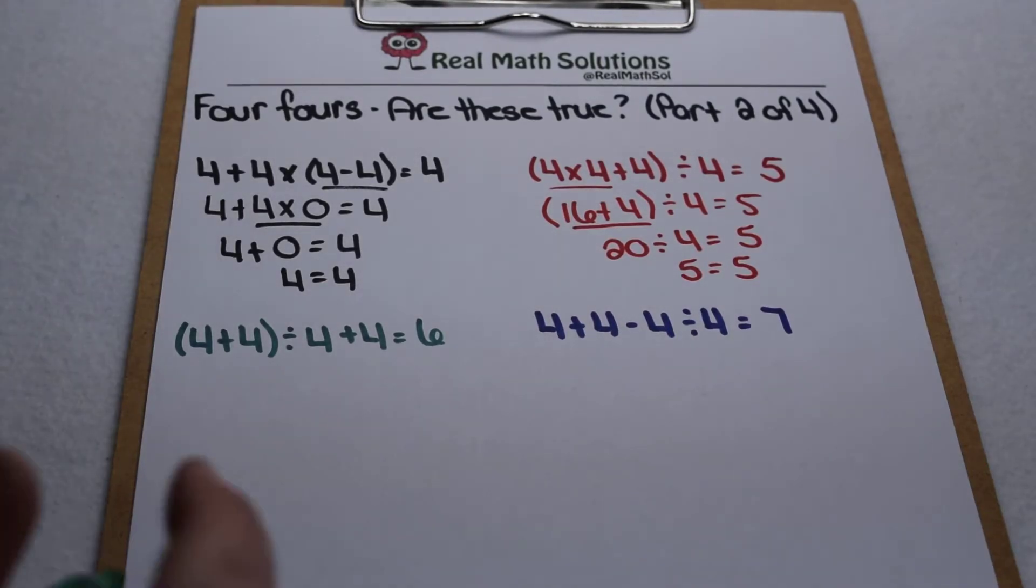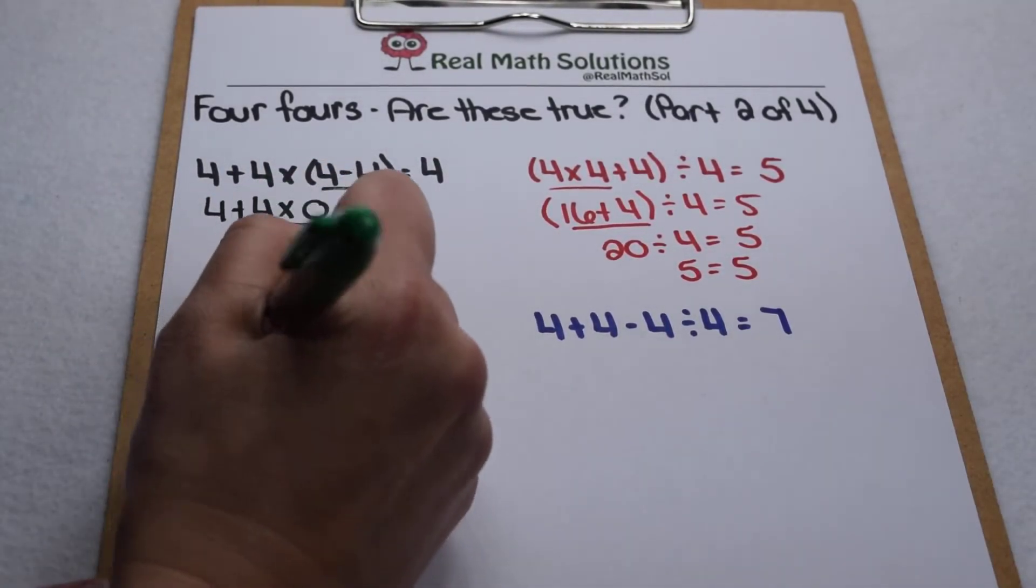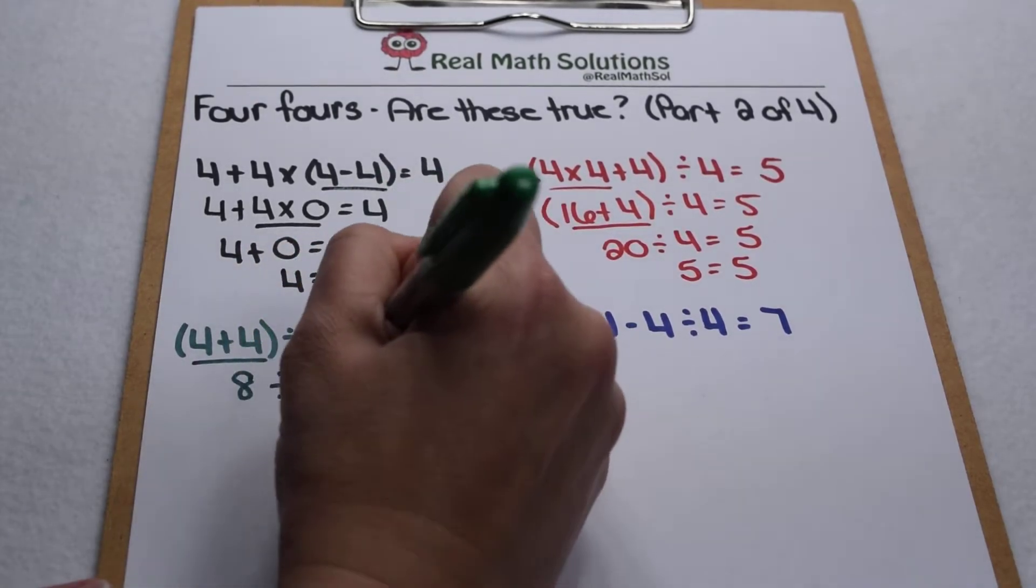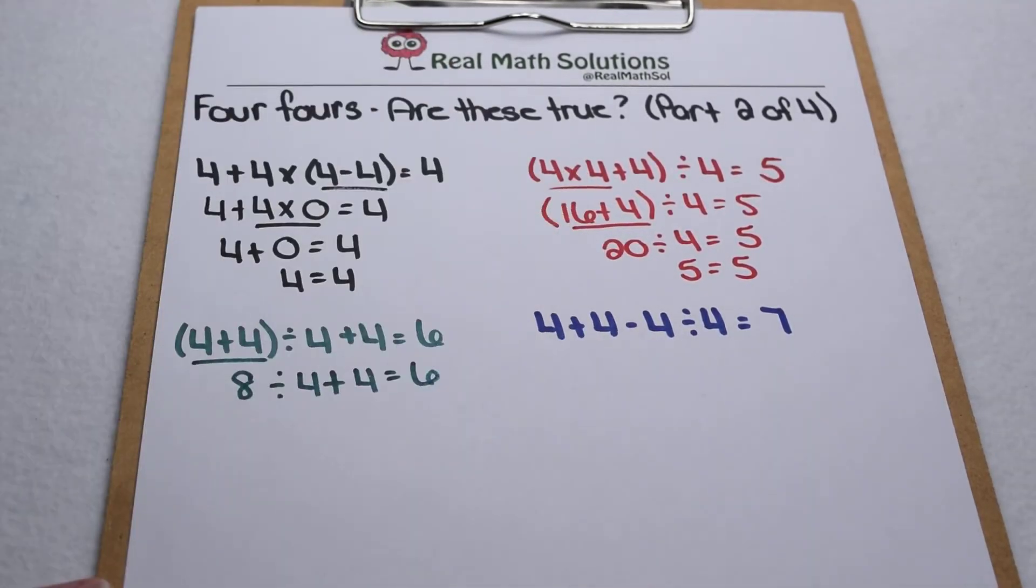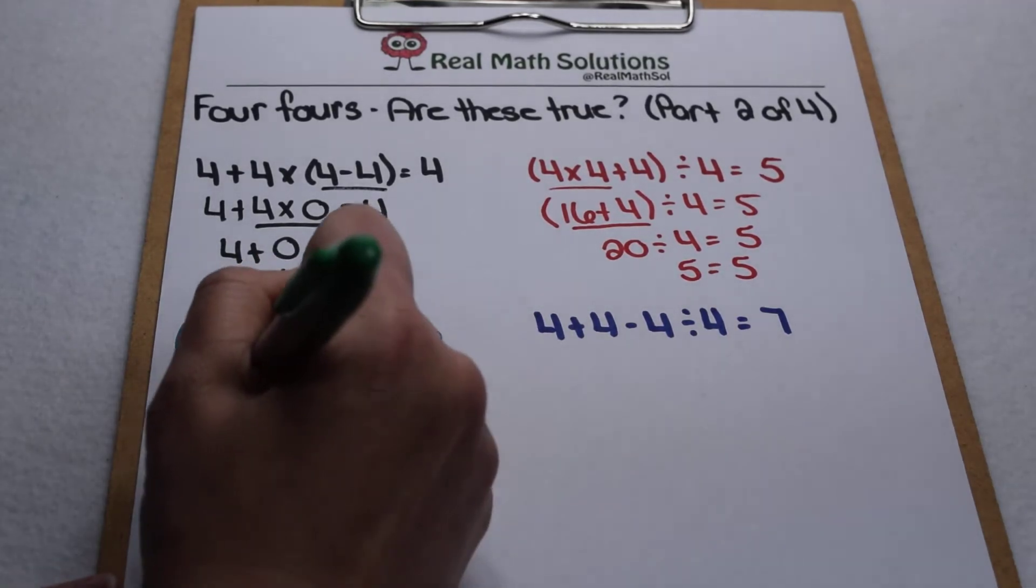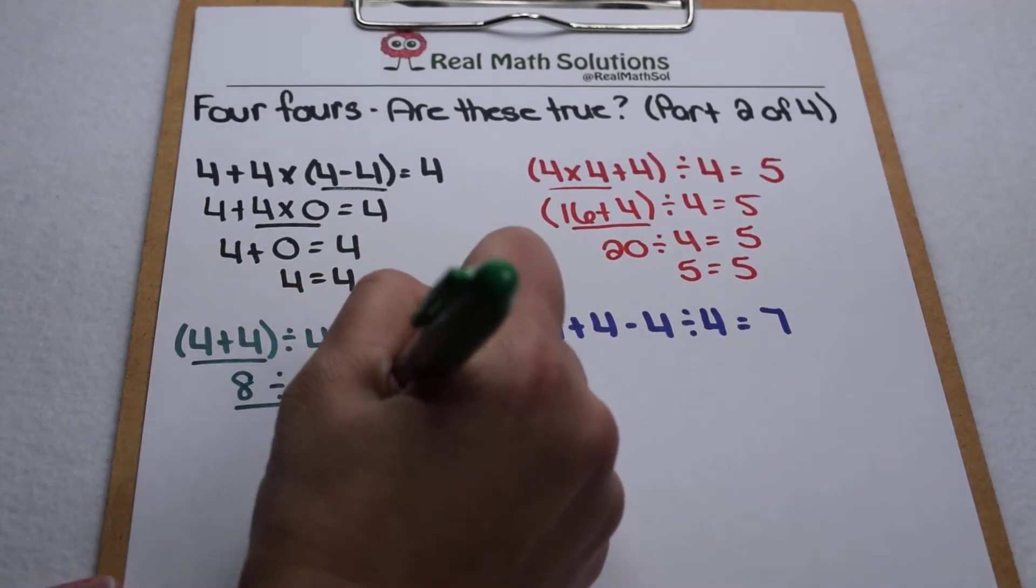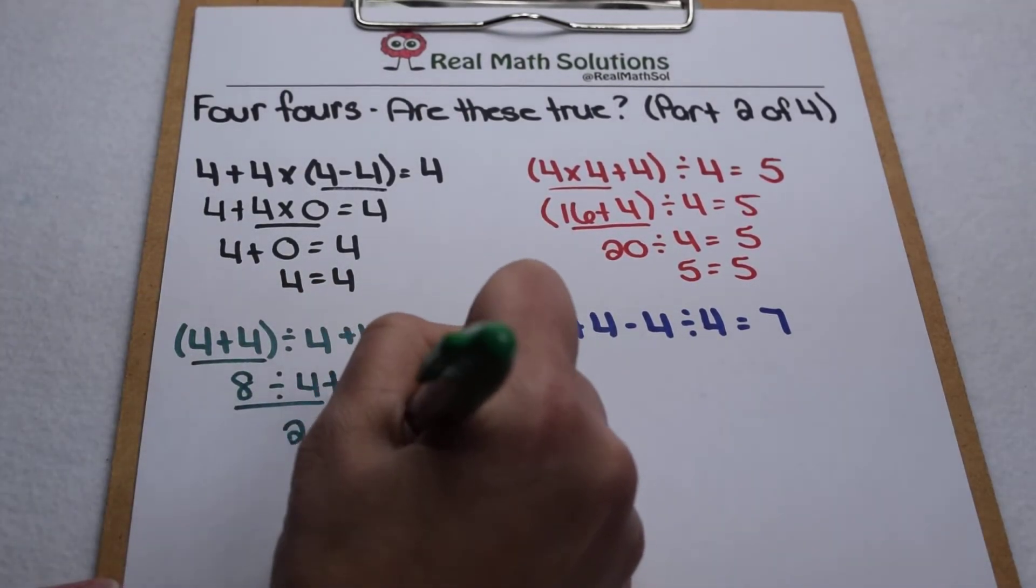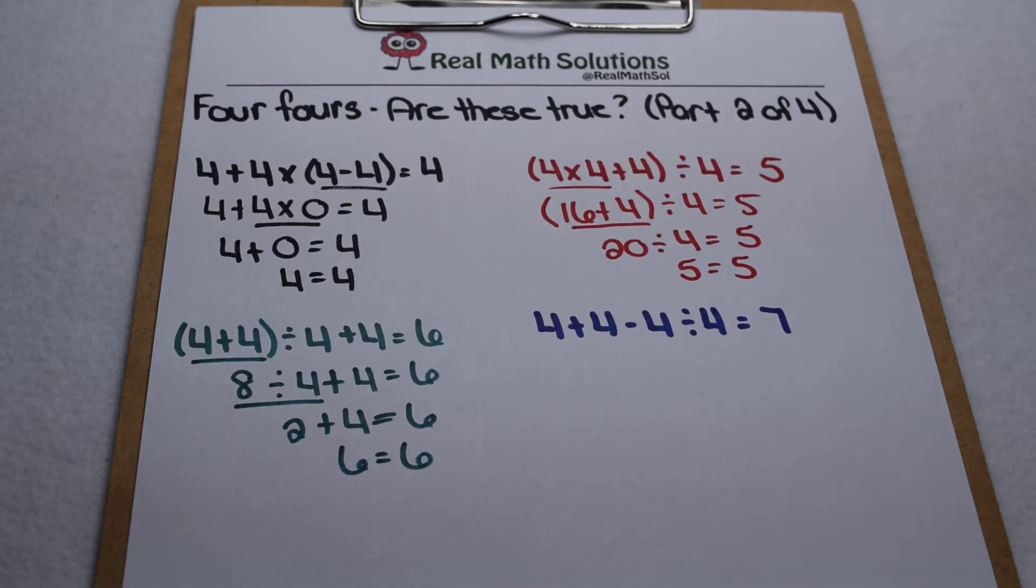Here to check out for 6, again we're going to start with our parentheses. So 4 plus 4 is 8. So that leaves us with 8 divided by 4 plus 4 to give us 6. Division comes next. So 8 divided by 4 is 2. That leaves us with 2 plus 4. 2 plus 4 does equal 6. So 6 equals 6 and that one balances out.